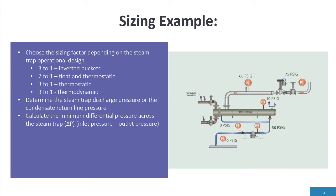Fluent thermostatics are two to one sizing factor, thermostatic is three to one sizing factor, and thermodynamic is three to one sizing factor. And we talked about in part one determining the steam trap discharge pressure or condensate return line pressure.